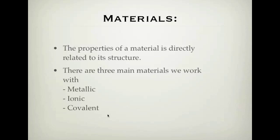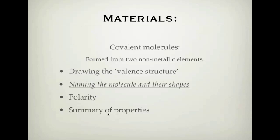Let's look at how covalent molecules come together and are formed. Fundamentals: they are formed from two or more non-metallic elements that combine and form bonds. We're going to look at drawing the valence structure of these molecules, naming the molecule and their shapes — which gets a bit difficult, so we'll cover that in the next video — and polarity, which explains their properties. This is Part 1 on drawing the valence structure.